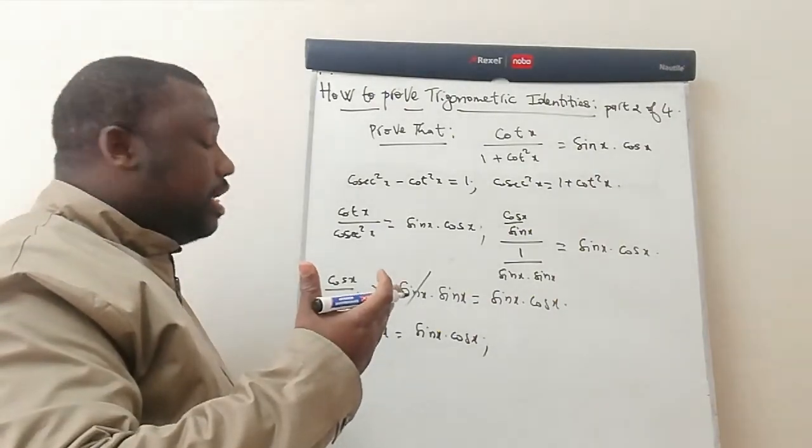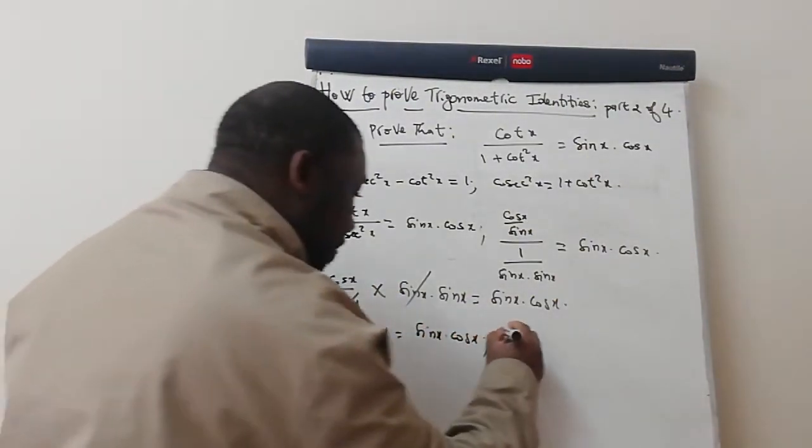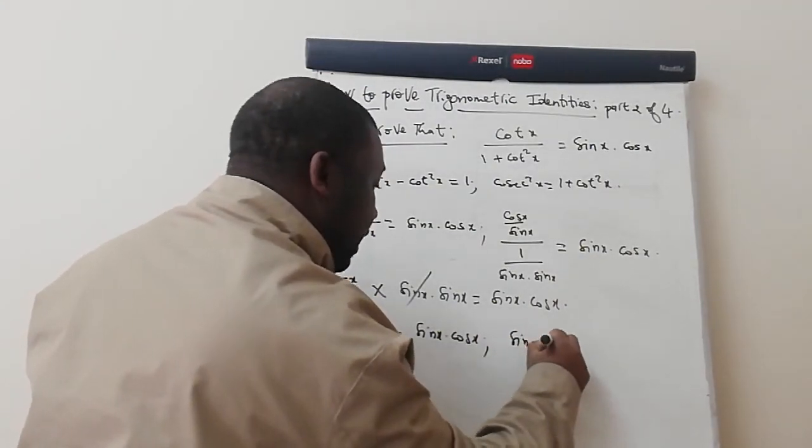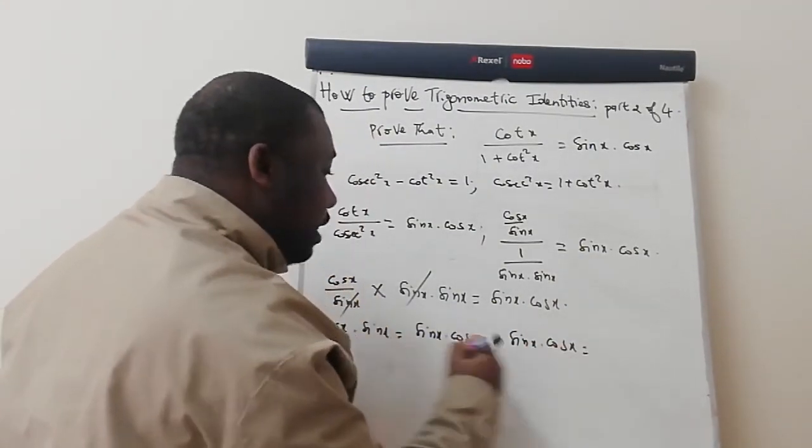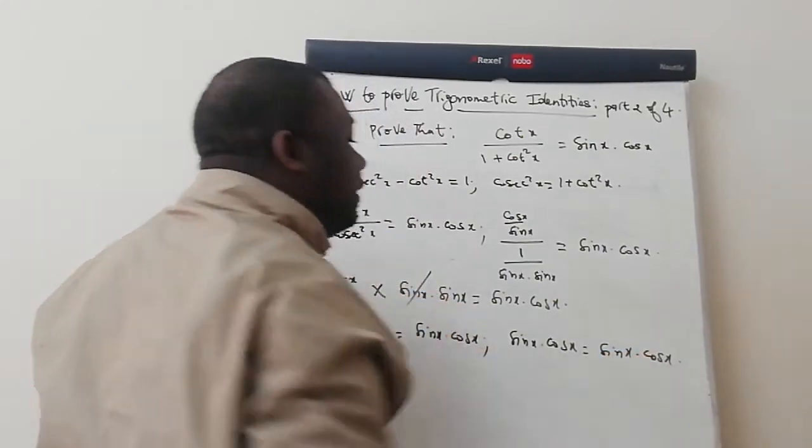By definition, if you have a times b, this can be written as b times a. So this can actually be written as sin x times cos x. This is equal to sin x times cos x.